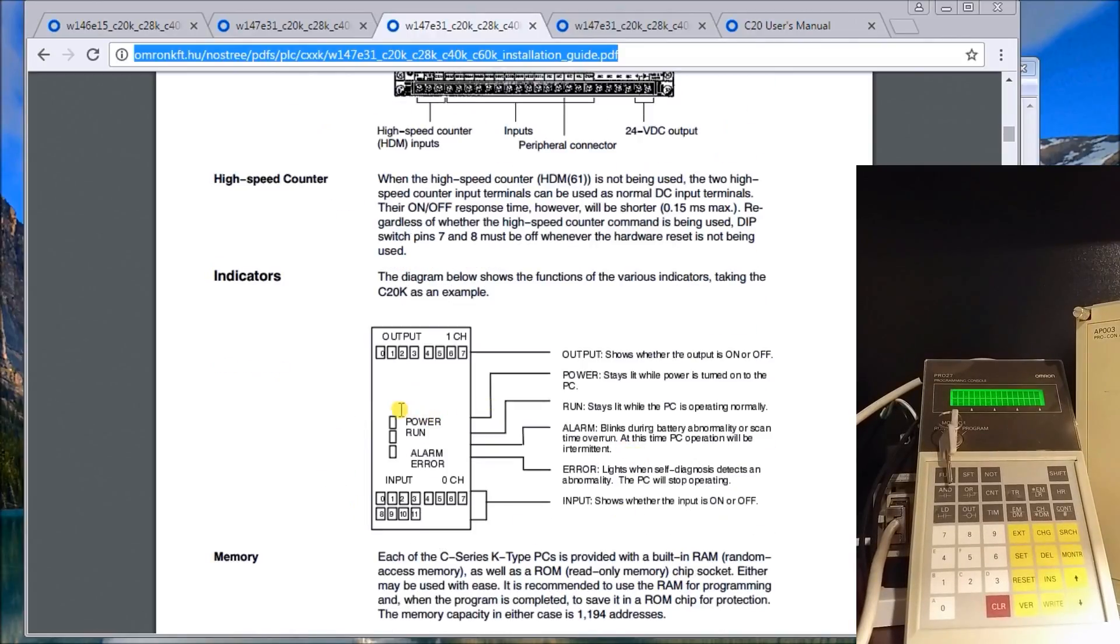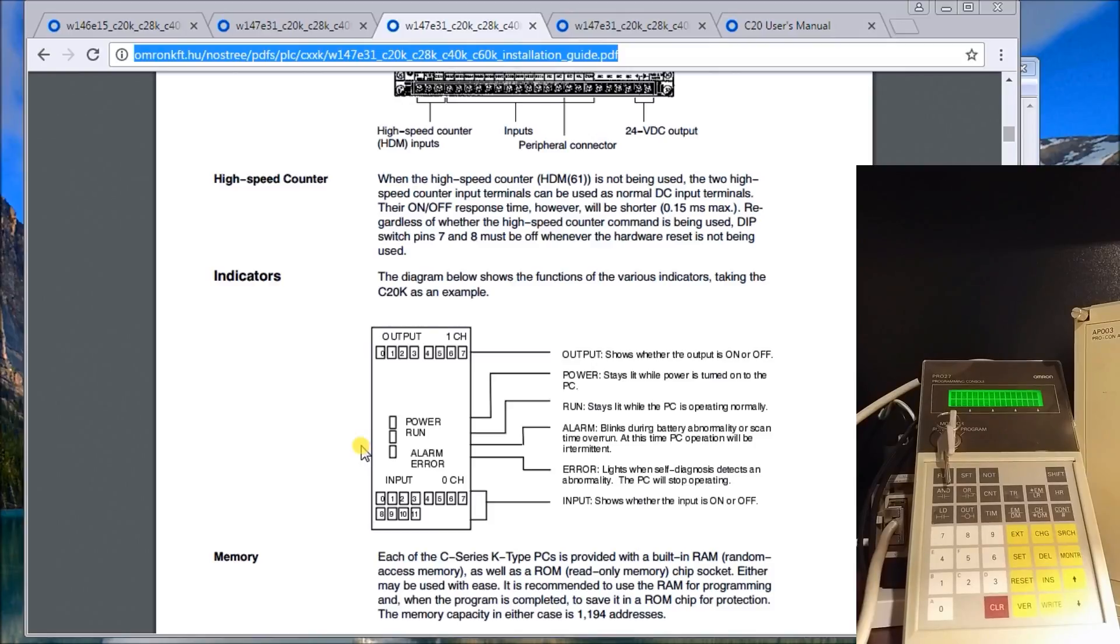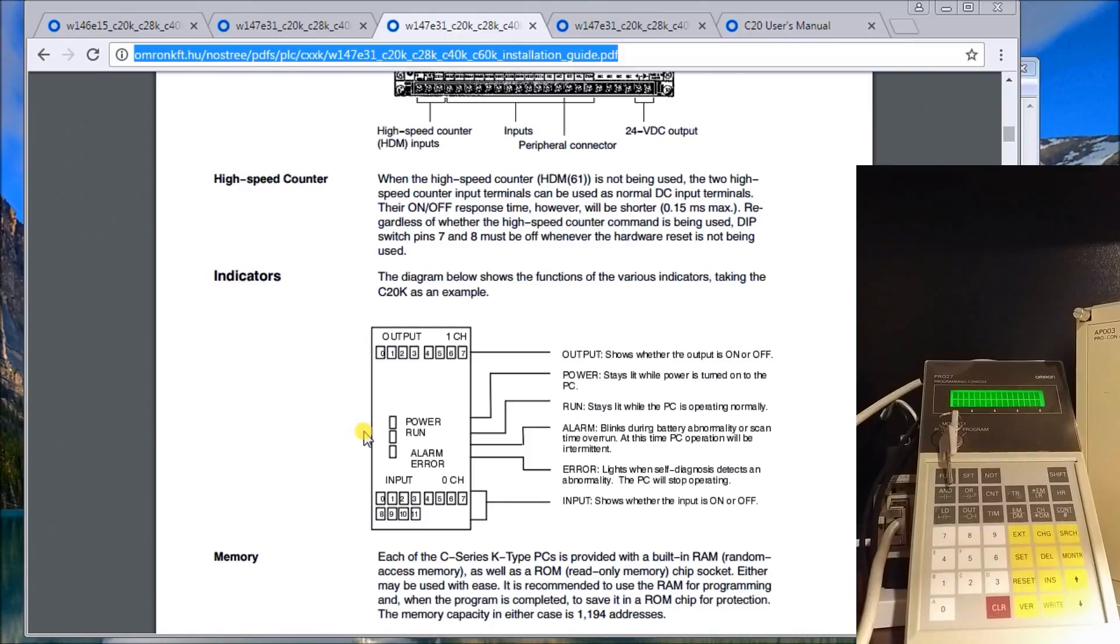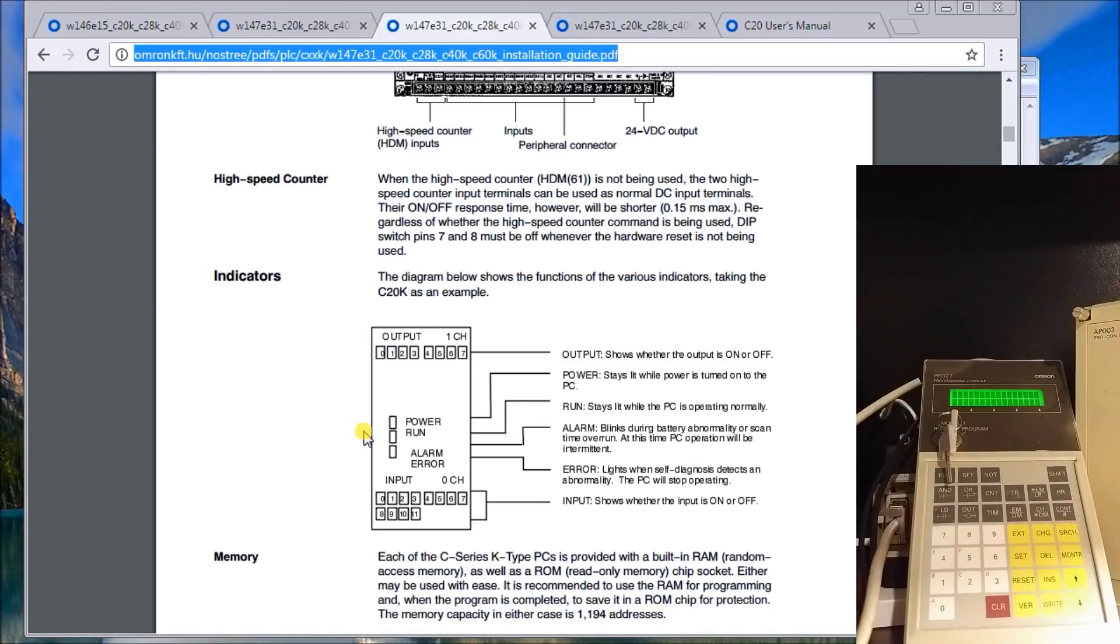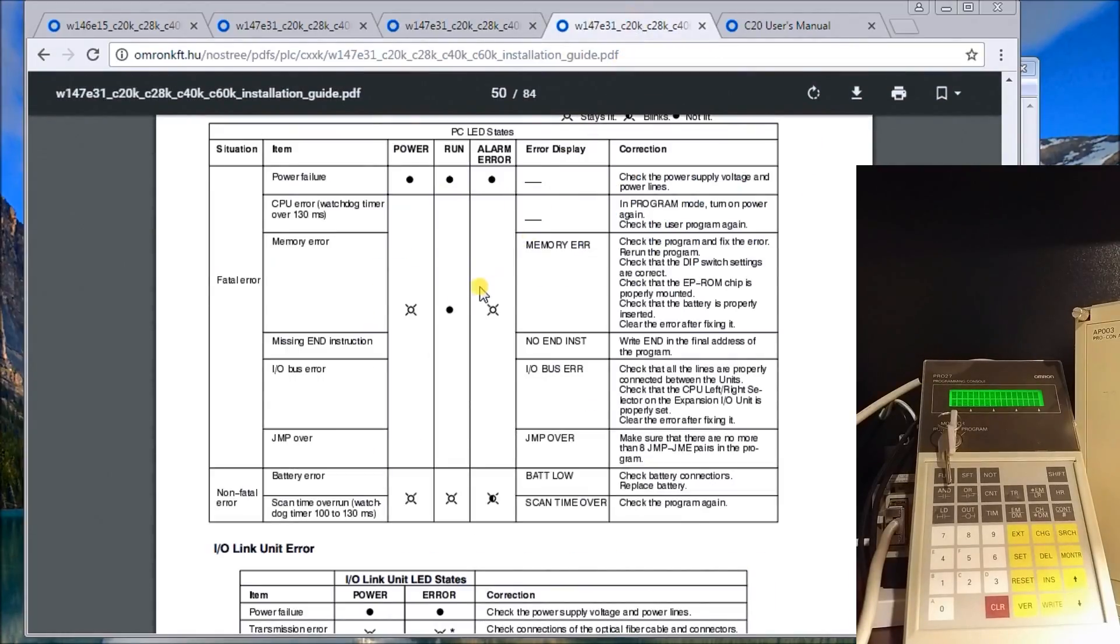The actual indications on here - we have a power light, we have a run light, and an alarm error light. So we have either fatal or non-fatal alarms. The fatal ones, you'll see the alarm light on solid, and a non-fatal, you'll see it blinking. Now the blinking light usually means that there's things like a battery.